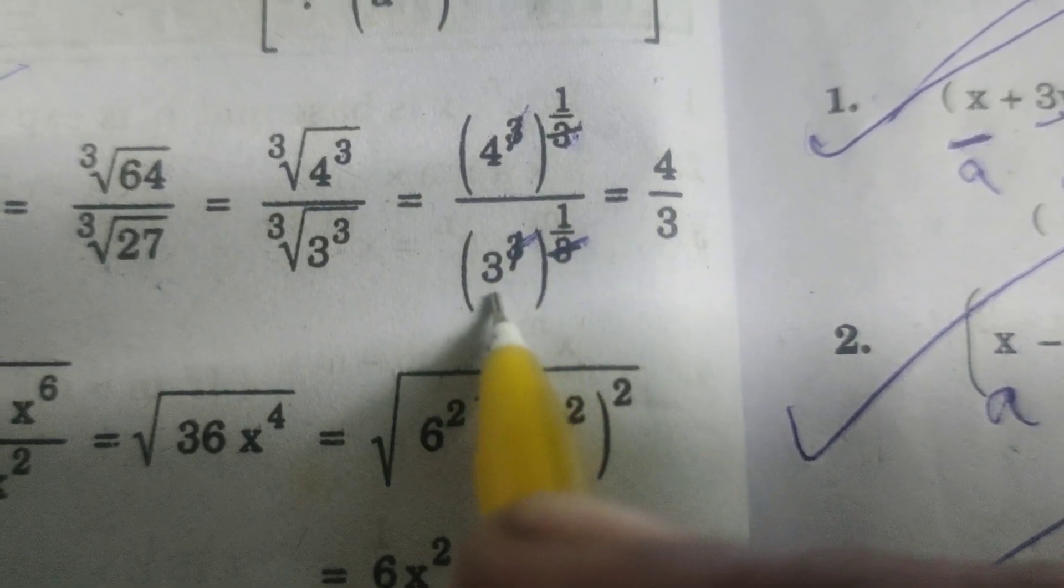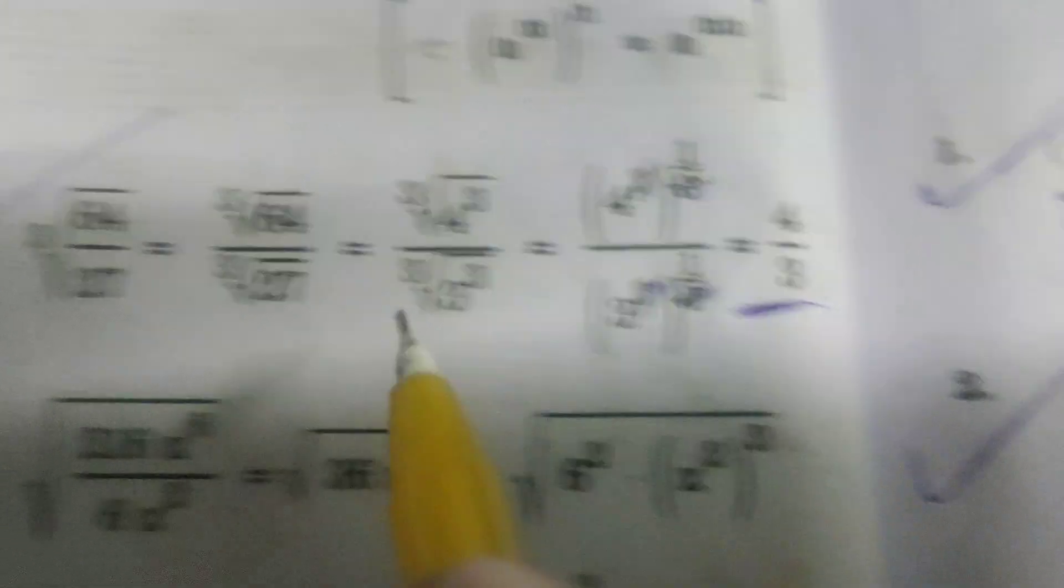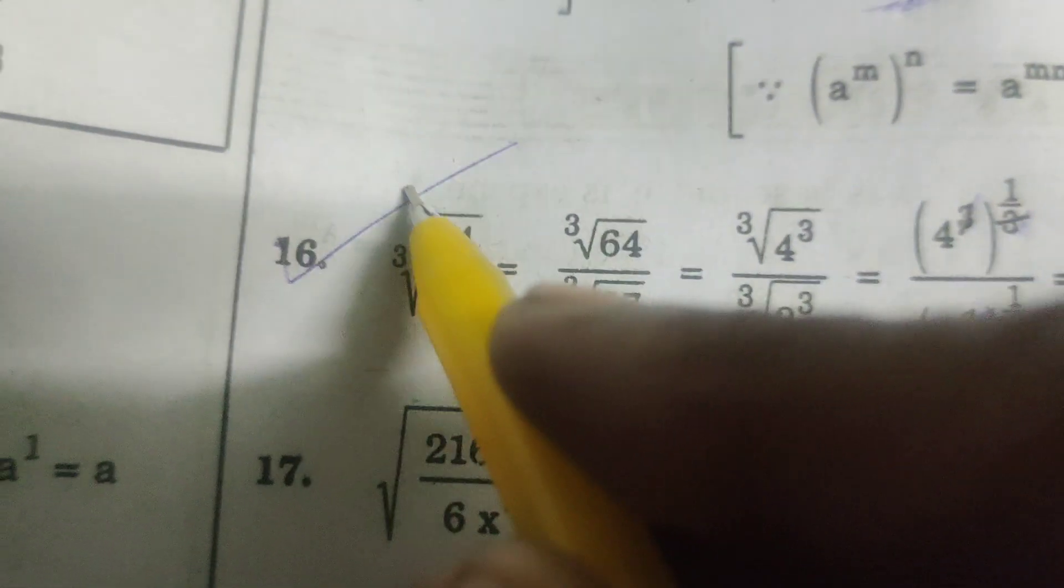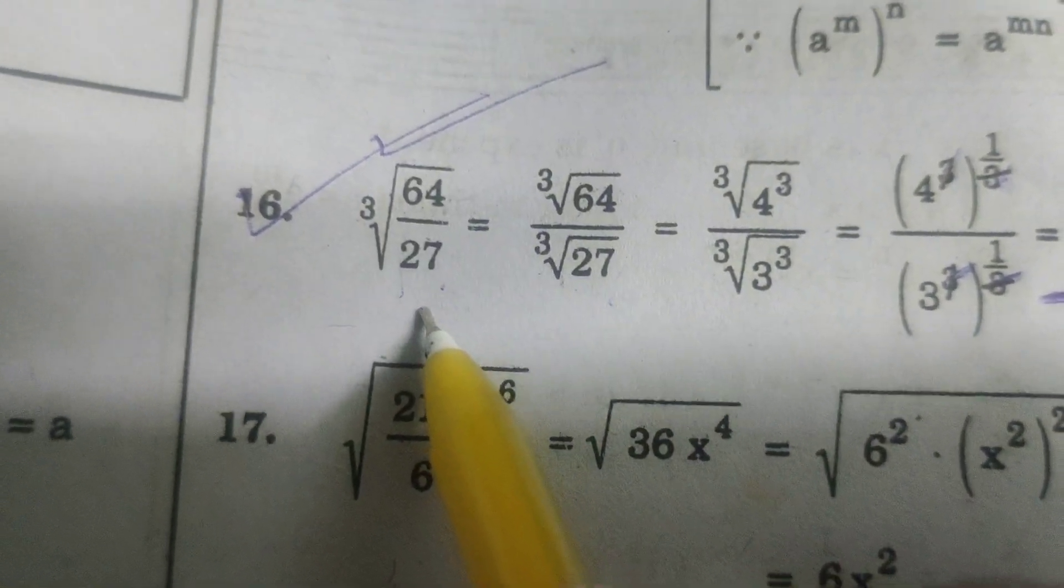So 3 cube gets cancelled. 3 power 1 means 3. 4 by 3 is the solution in this simplification problem. 3 root of 64 by 27.